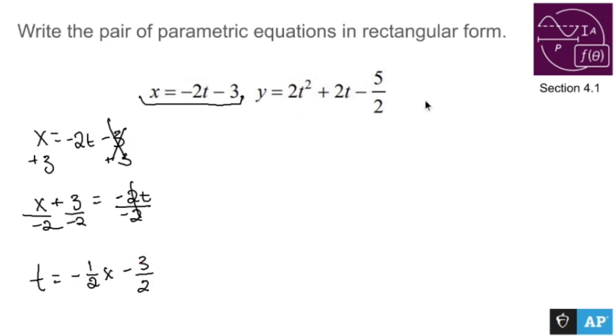So to make it rectangular, I'm going to replace every t with that guy right there. A little bit of foiling is going to happen, but that's all right. We have fun here. y equals 2 times negative 1 half x minus 3 over 2. It's going to be squared. So why don't I just do the foil thing while I'm at it? Let's foil this out.